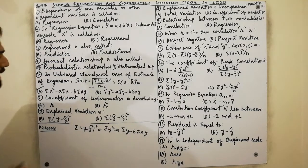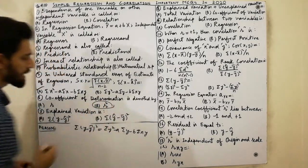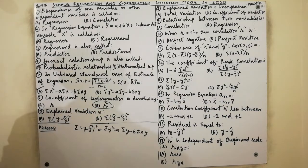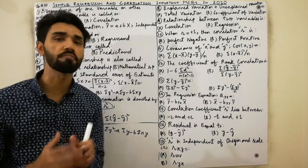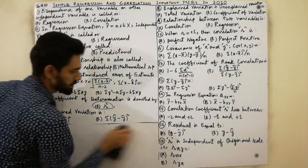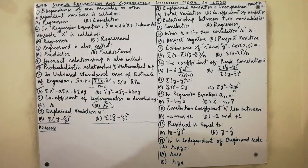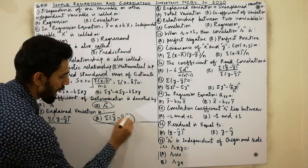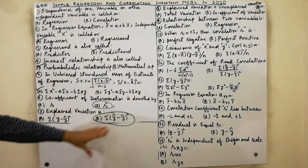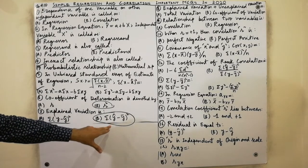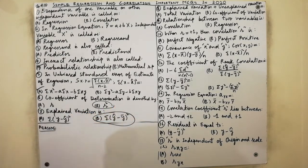The coefficient of determination is denoted by small r². It is the ratio of explained variation to total variation. Explained variation is Σ(Ŷ − Ȳ)². Must remember that explained variation = Σ(Ŷ − Ȳ)².